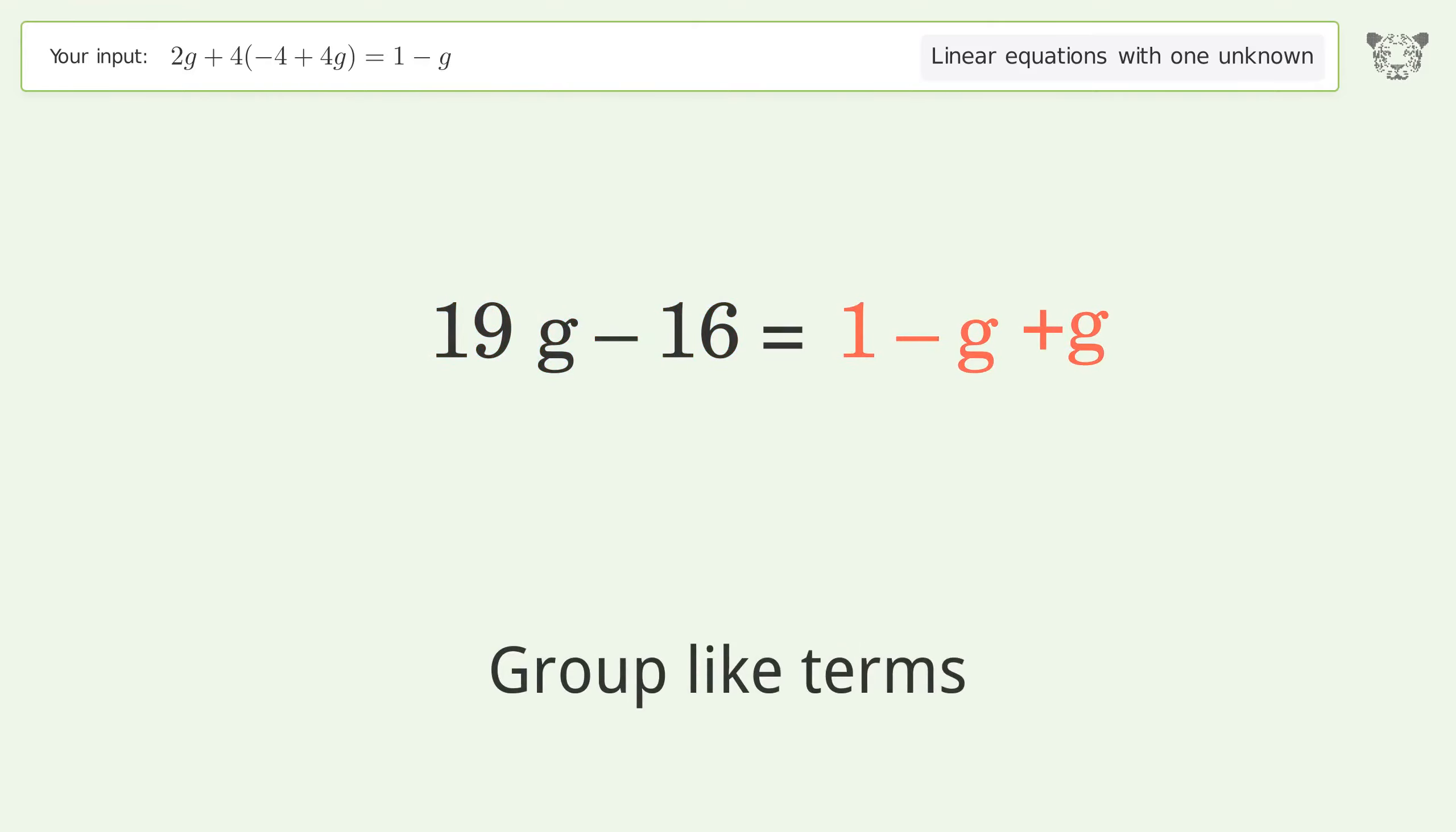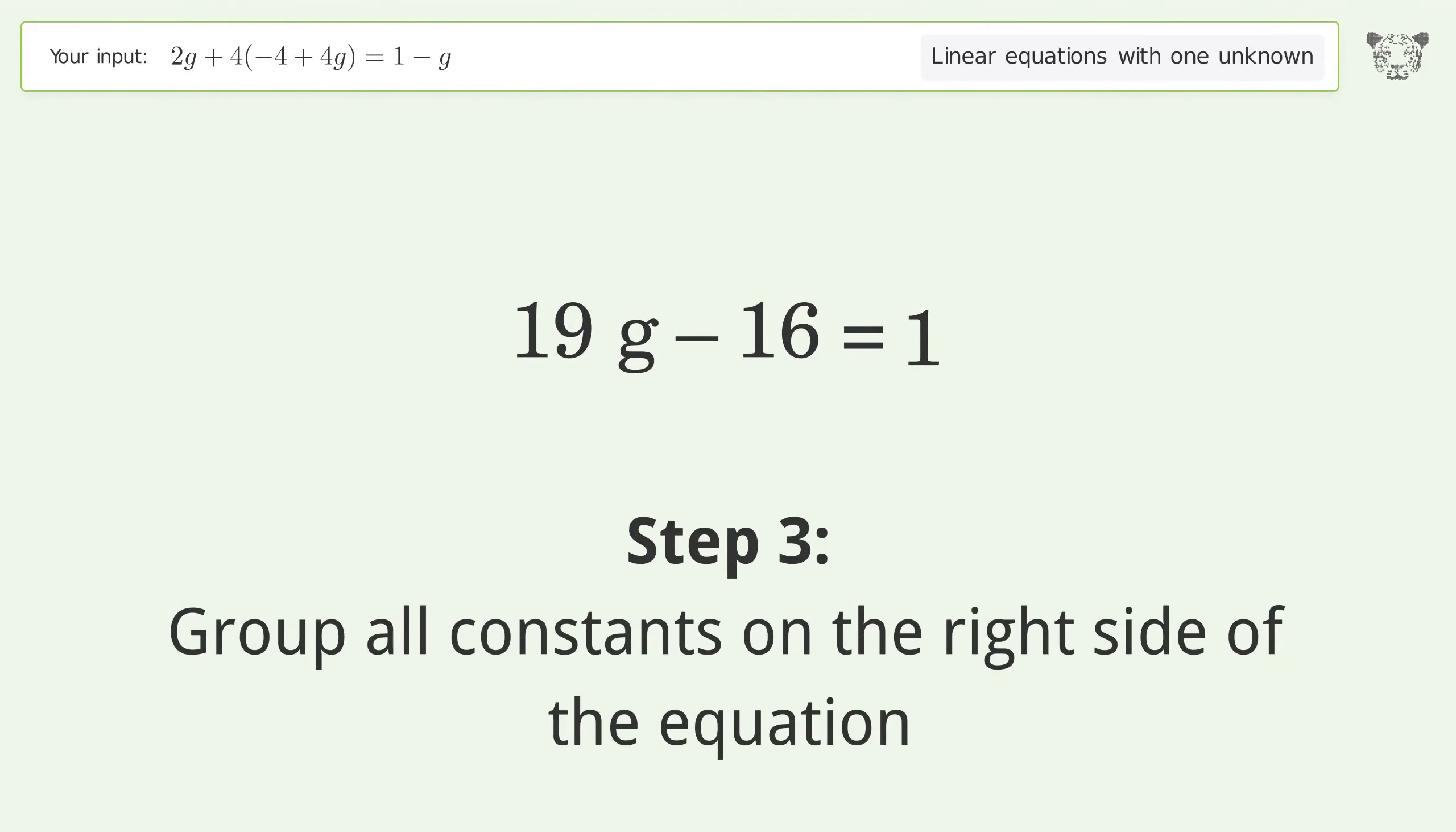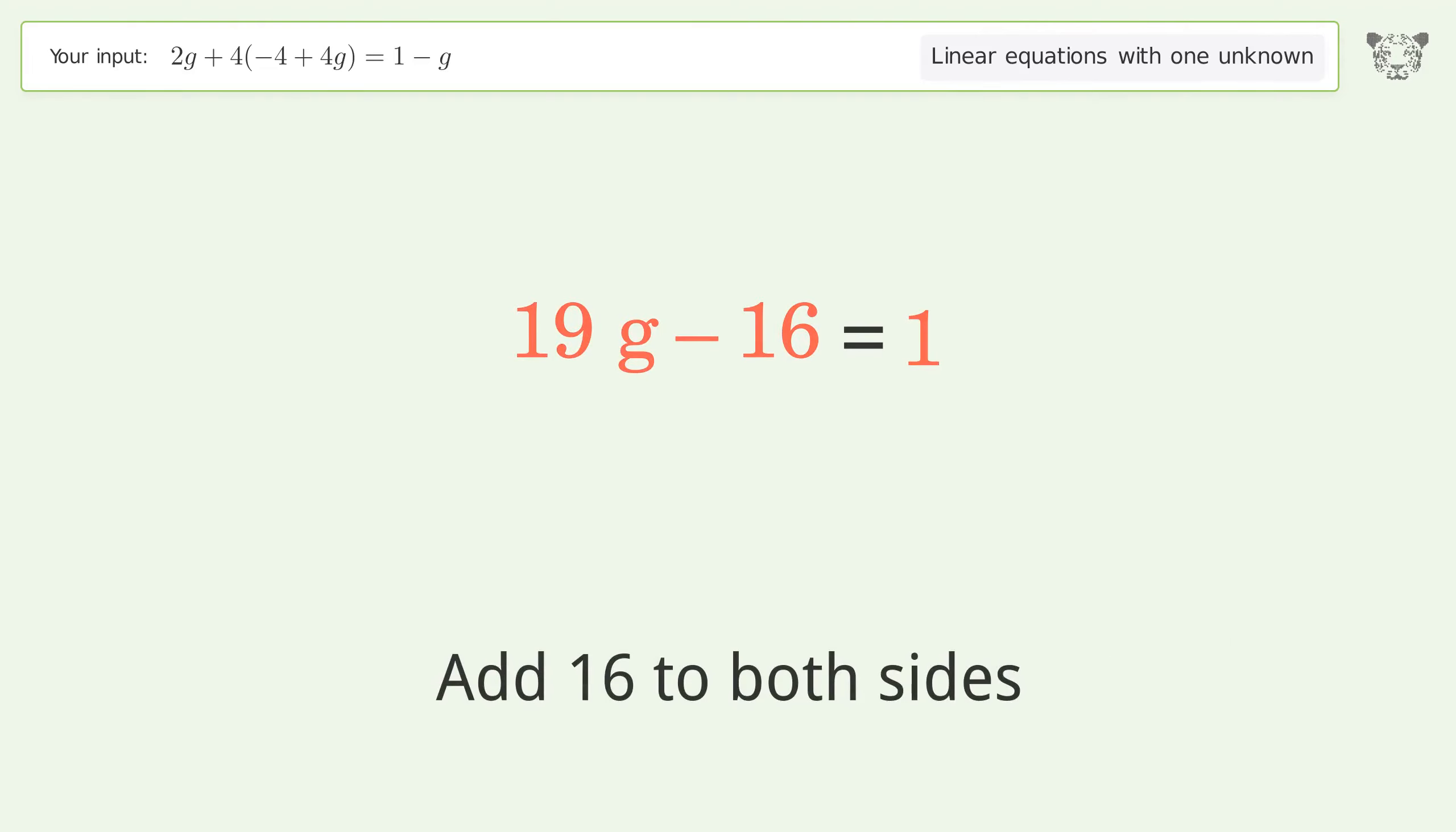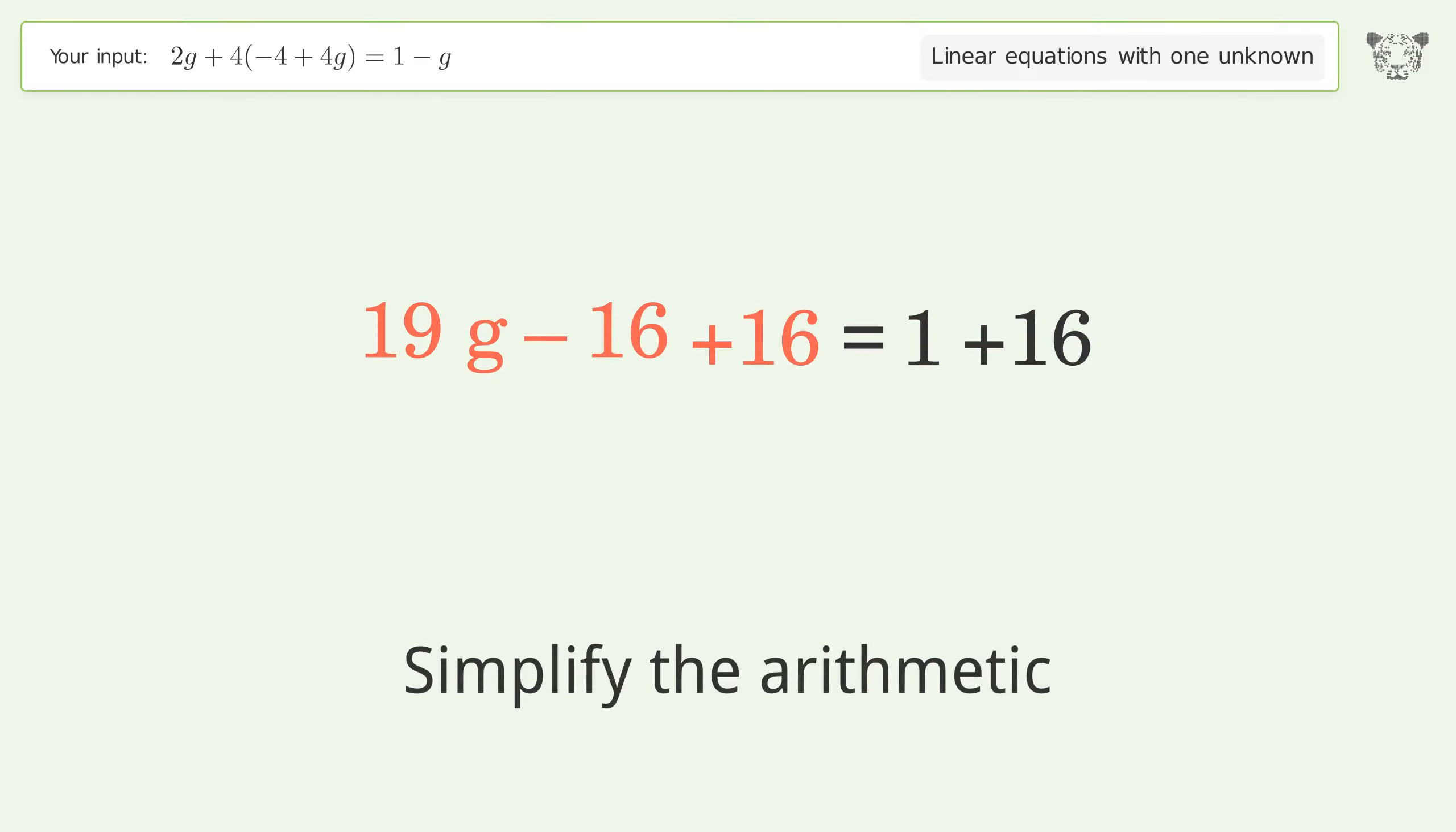Group like terms. Simplify the arithmetic. Group all constants on the right side of the equation. Add 16 to both sides. Simplify the arithmetic.